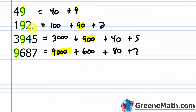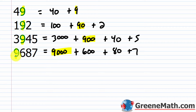In 3,945, the 9 is in the hundreds place, so it's 9 times 100, or 900. Then in 9,687, the 9 is in the thousands place, so it's 9 times 1,000, or 9,000. The main point is that as we change the position of that digit 9 in a number, it gets a different value based on where it is — its position or placement.